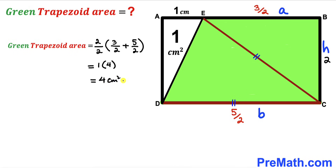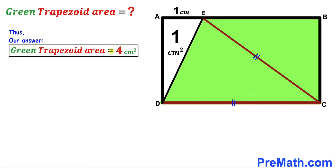The area of the green shaded trapezoid EBCD is 4 centimeters square — that's our final answer. Thanks for watching and please don't forget to subscribe to my channel for more exciting videos.